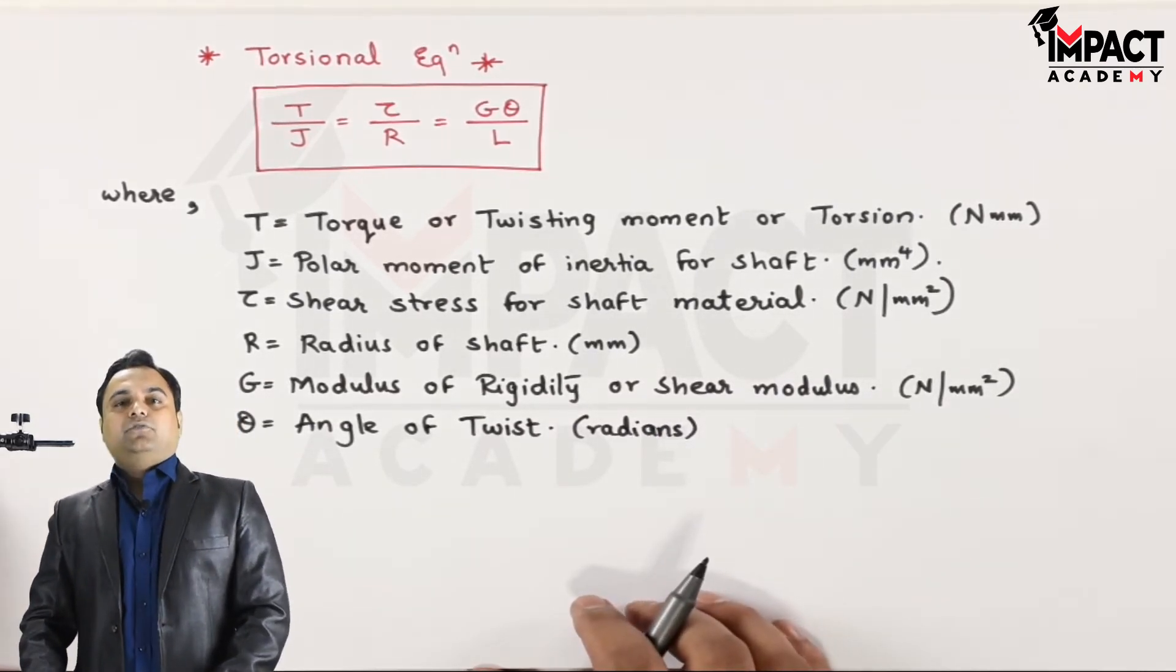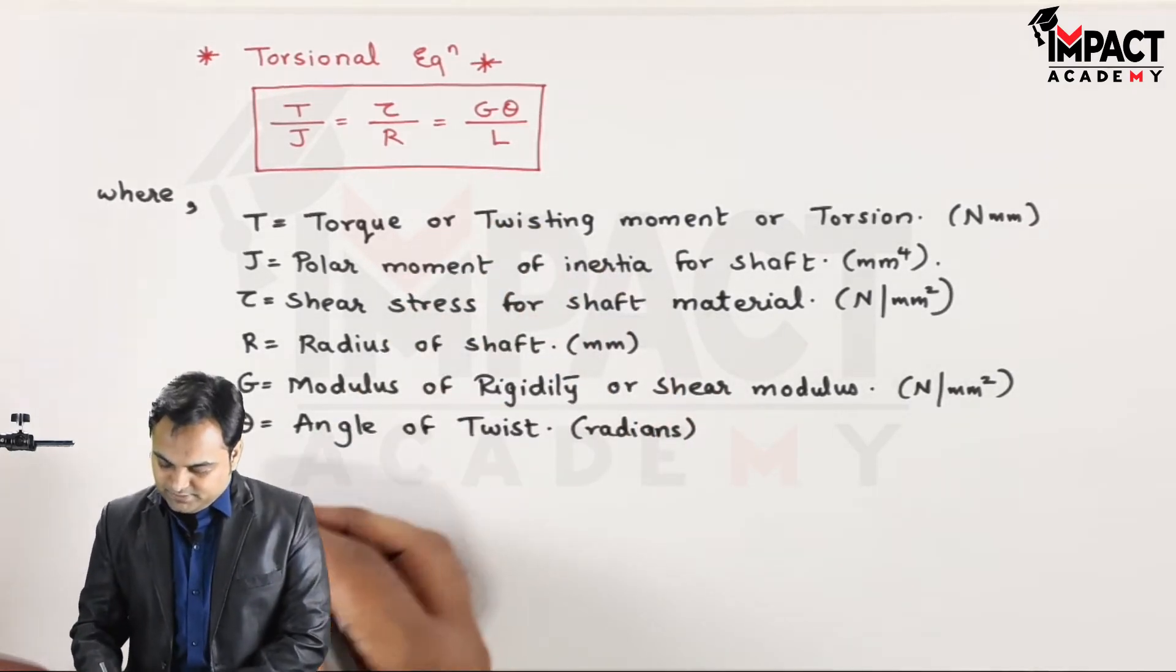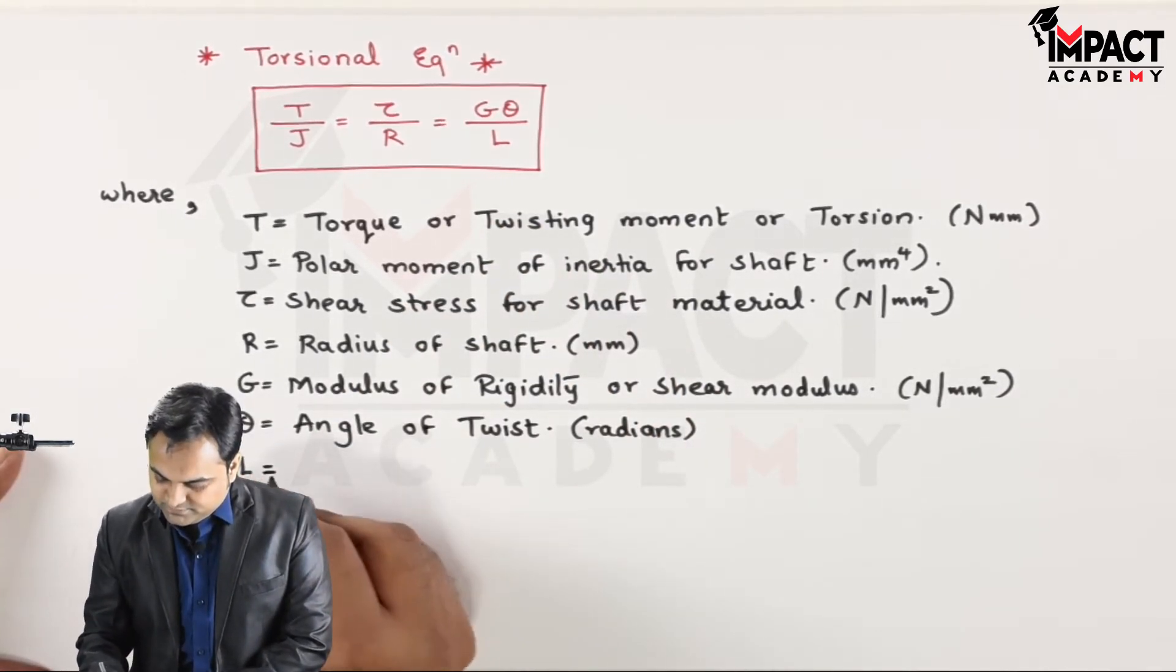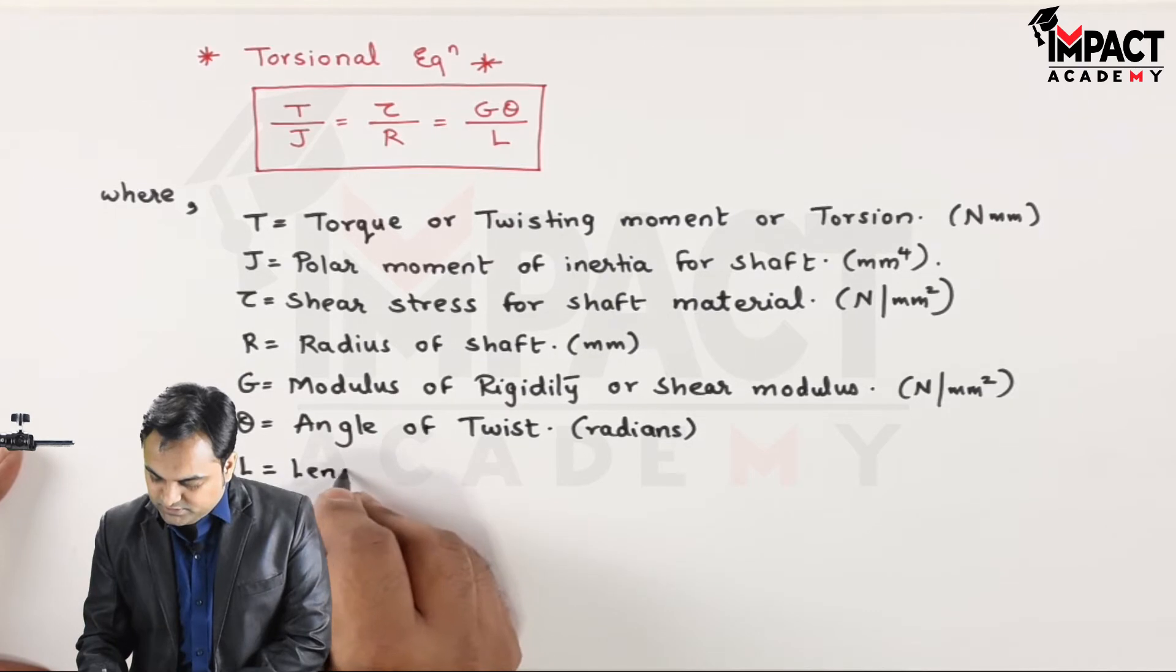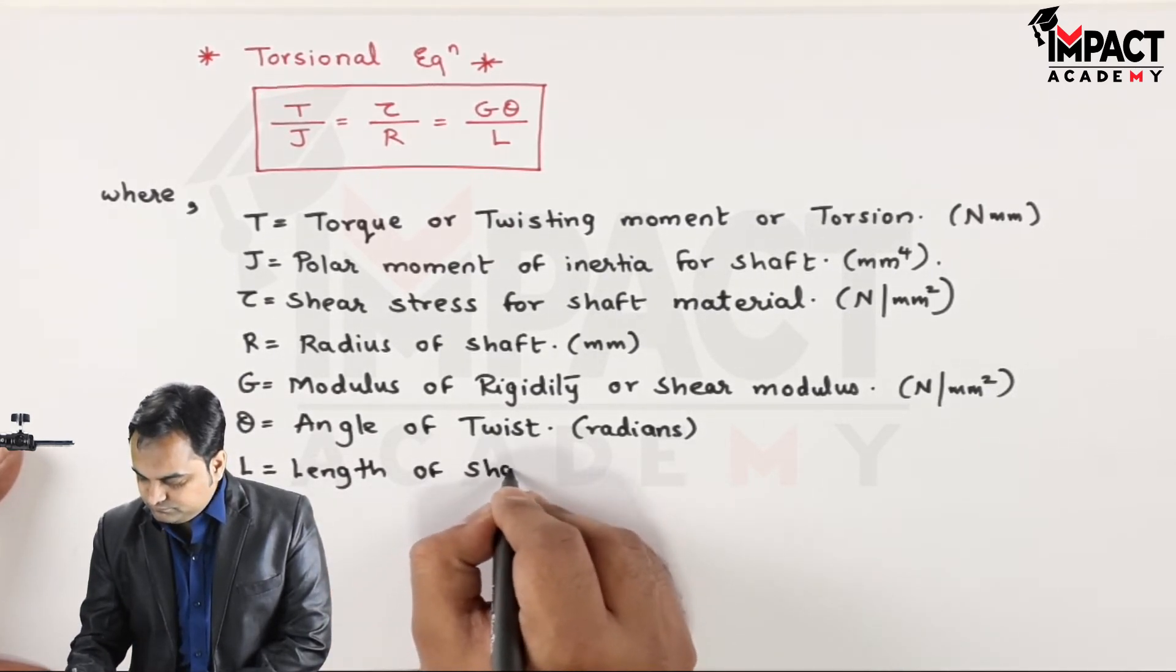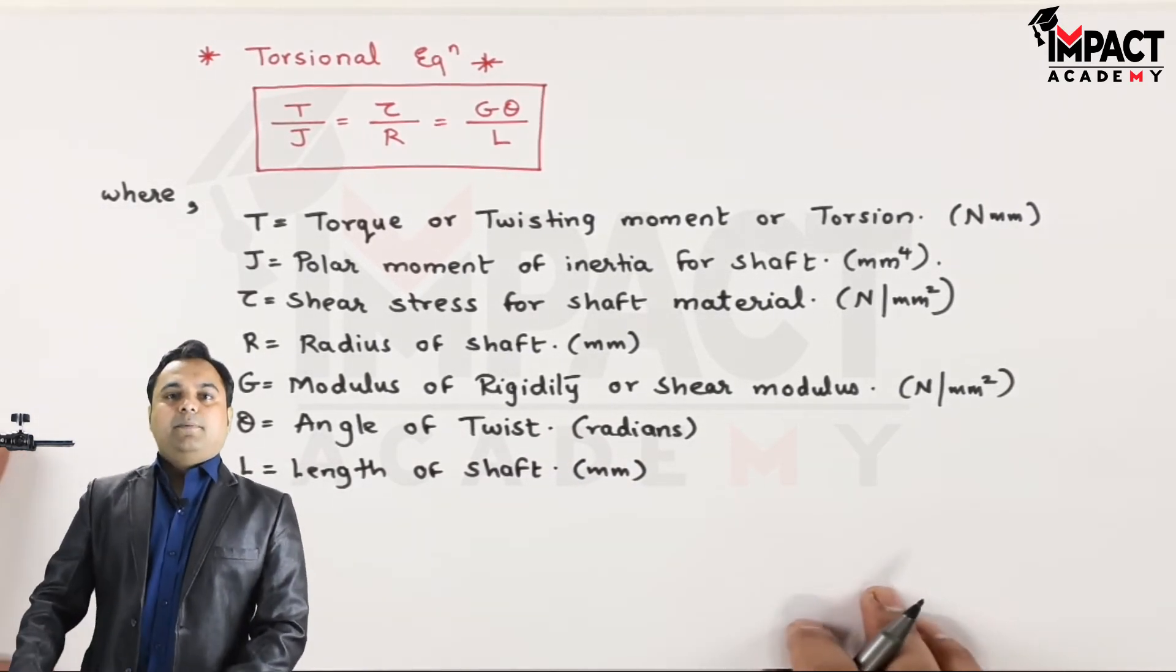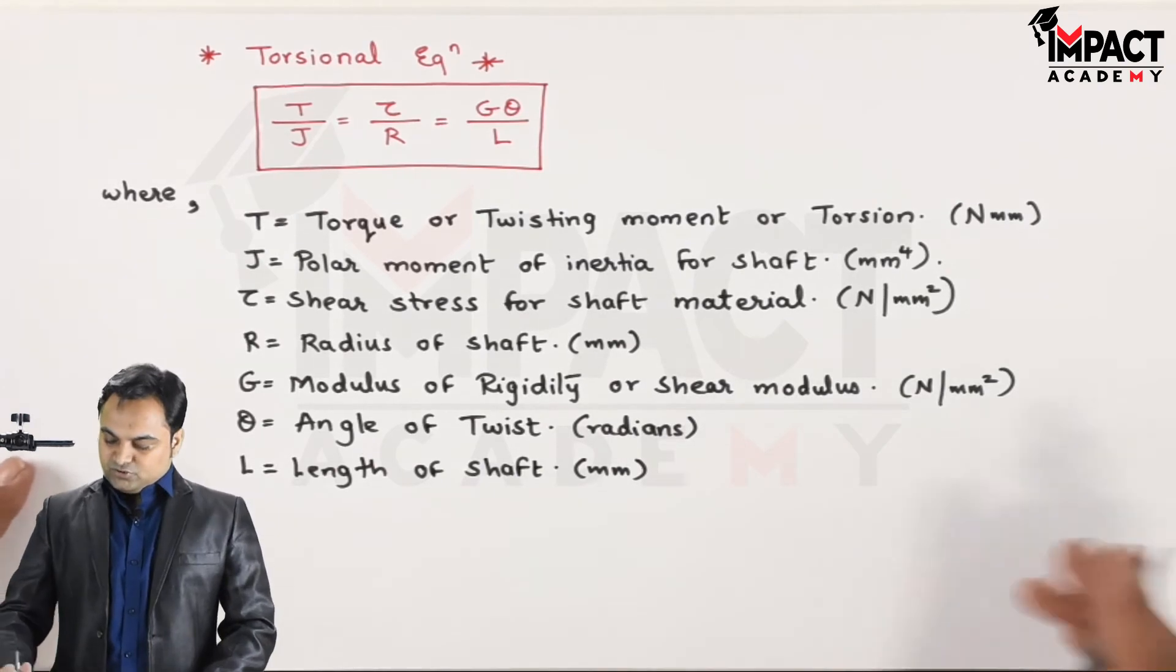Theta is called as the angle of twist and the unit would be in terms of radians. Then at last L, which is the length of shaft, and it will be in terms of millimeters.